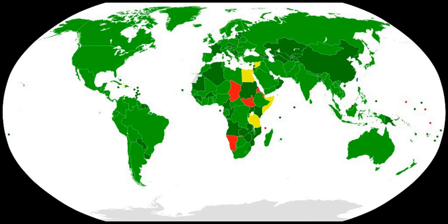The United States Congress passed the Bioweapons Anti-Terrorism Act in 1989 to implement the Convention. The law applies the Convention's content to countries and private citizens, and criminalizes violations of the Convention.